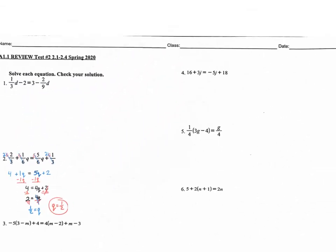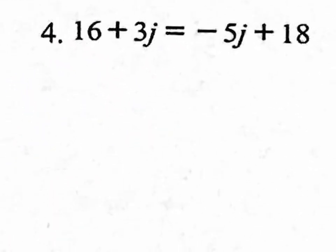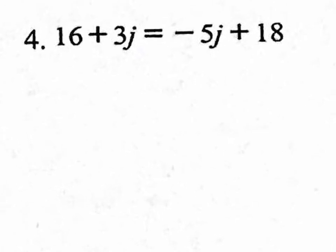Let's jump to number 4. The odd ones are explained on another video — if you need help on those, watch the video on Edmodo that has the odd questions explained. Right here on number 4, there are no fractions. There's no distributive property and no combining like terms on the left side, so this is already a simplified equation. We can jump right into the goal of getting the letter by itself on one side. The J is on both sides of the equal sign — I don't want J's on both sides.